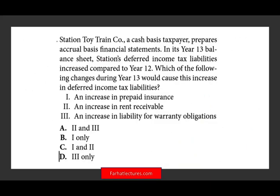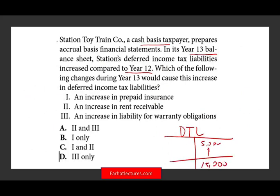Let's take a look at question two. Station Toy Train, a cash-basis taxpayer, prepares accrual-basis financial statements. In year 13's balance sheet, the deferred income tax liability increased compared to year 12 — for example, from $5,000 to $15,000. Which of the following changes during year 13 would cause this increase in deferred tax liability? Simply put: what would increase your deferred tax liability?